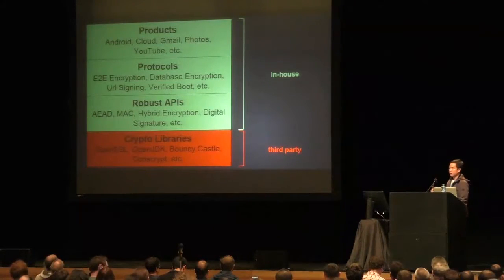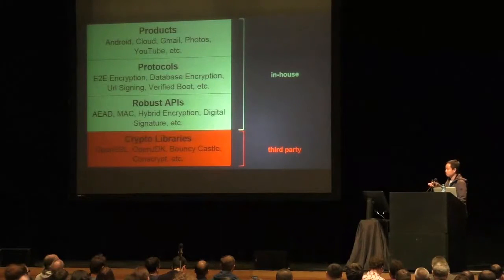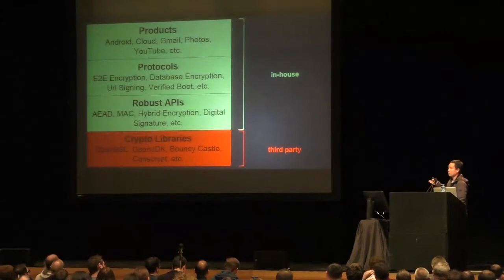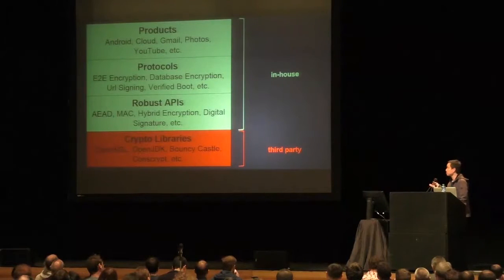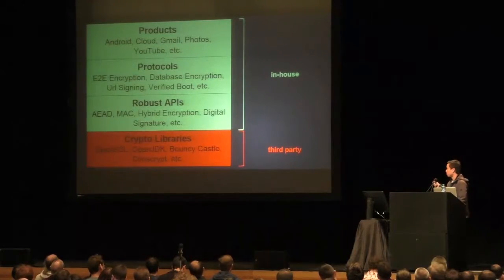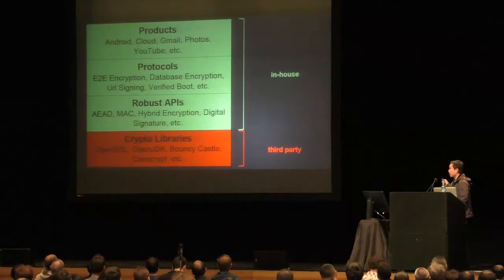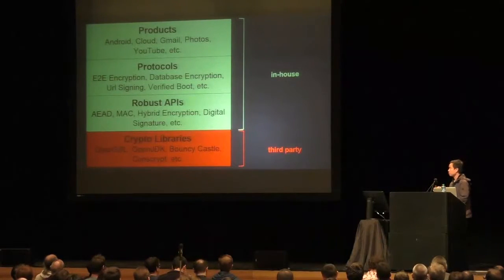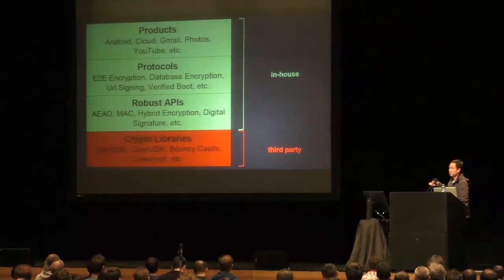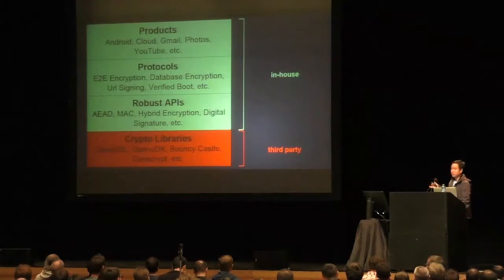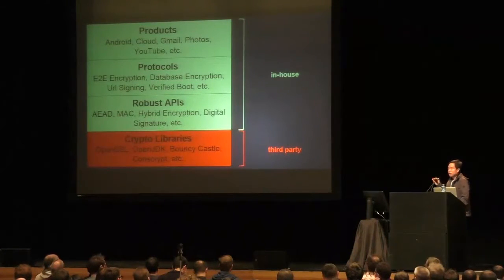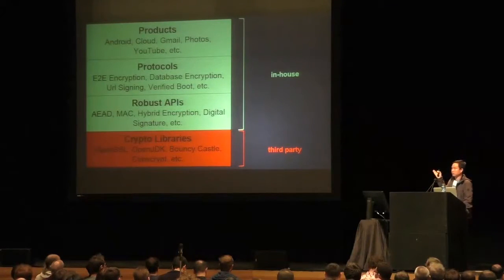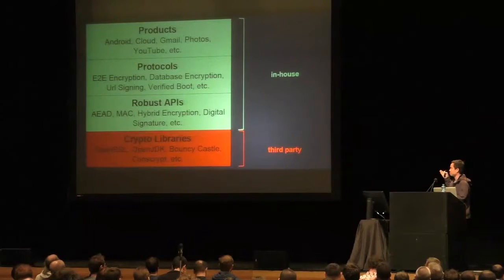These APIs basically implement the common crypto operations like authenticated encryption, signature, or hybrid encryption. And these APIs in turn are built on top of third-party open source crypto libraries like OpenSSL, OpenJDK, or BouncyCastle. I name these libraries just because we use them — not because they are better or worse than other libraries.